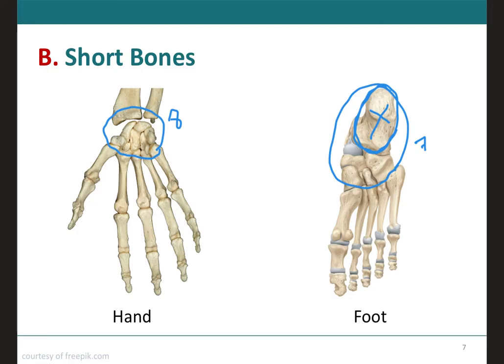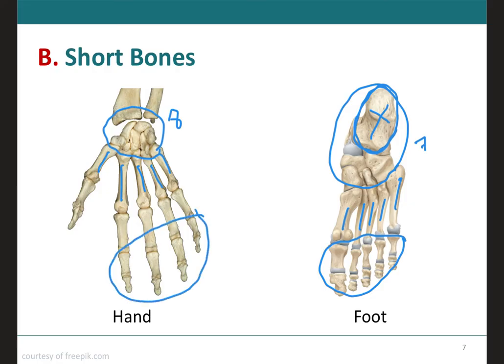In this image we also see the metacarpals, present in the hand. The equivalent bones in the foot are called metatarsals, and then we have the phalanges, which form the fingers and the toes — these are also considered long bones. So together, the metacarpals, metatarsals, and phalanges are all grouped together and considered long bones.